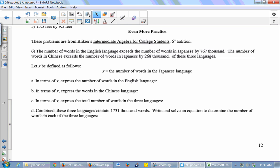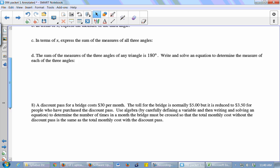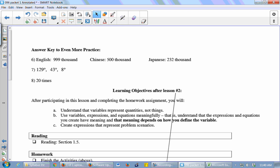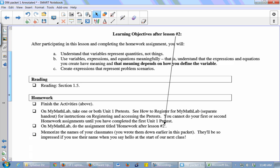Or if while you're studying you feel you need some more practice, you've got lots more practice problems available to you. The answers to those are also immediately following the problems - answer key to even more practice. And then at the very end it's called learning objectives after lesson number two or lesson number whatever class it is. There's a list of things that you should be able to do. And there's a reading assignment. And then there's a homework assignment.